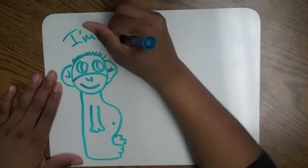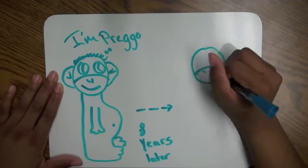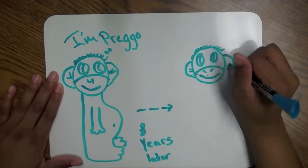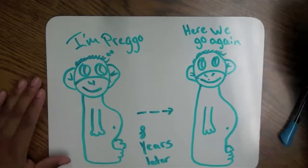Orangutan females give birth about once every eight years, which is the longest time between births of any mammal on earth. This is why orangutan populations are very slow to recover.